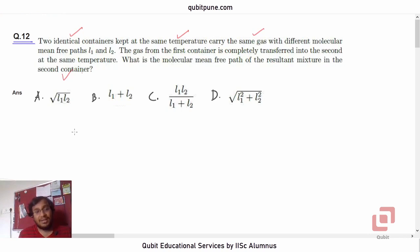Let us recall the formula that we intend to use here, and that formula is: Lambda equals V upon root 2 pi d squared N.